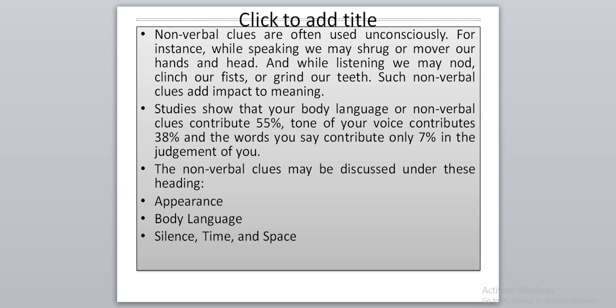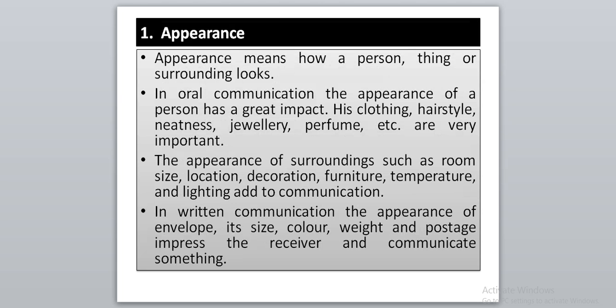Non-verbal clues may be discussed under three main kinds: Number 1 is Appearance, Number 2 is Body Language, and Number 3 is Silence, Time and Space. Appearance means how a person, thing, or surrounding looks.